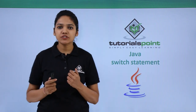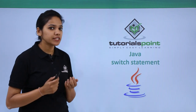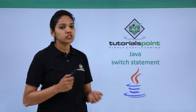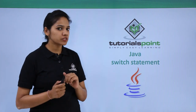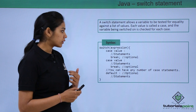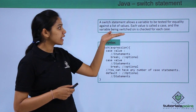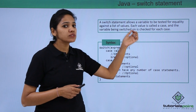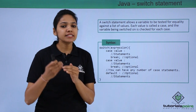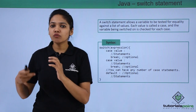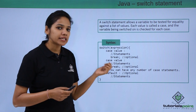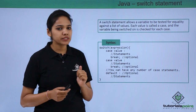The next part of the decision statement available is the switch statement. Let us see how it works and what it is all about. A switch statement allows a variable to be tested against a list of values. Let us take an example for better understanding.